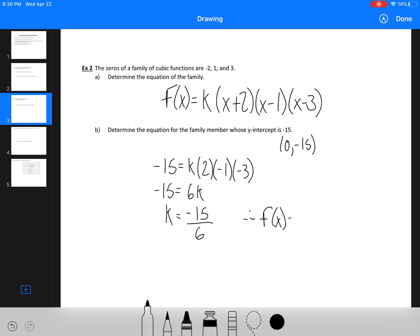f(x) equals negative 15 over 6 times (x plus 2)(x minus 1)(x minus 3) is the equation.